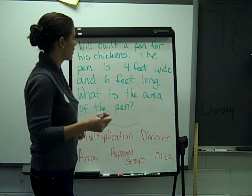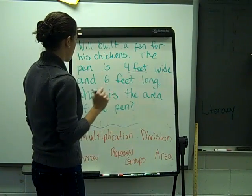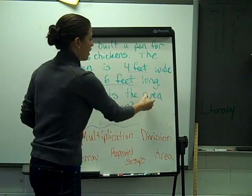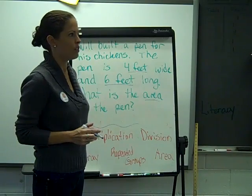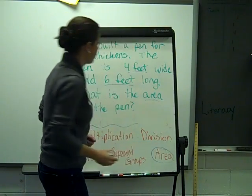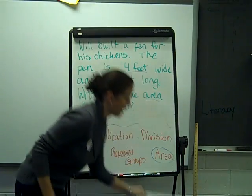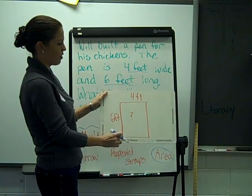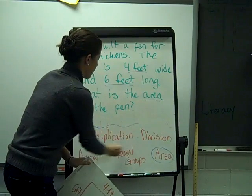Will built a pen for his chickens. The pen is 4 feet wide and 6 feet long. What is the area of the pen? That gives you a clue right now to what type of problem you're going to do — it is an area problem. If we're saying it's 4 feet by 6 feet, we can show that in a picture: 4 feet wide, 6 feet long. We want to find the area, so we have to multiply to figure that out.